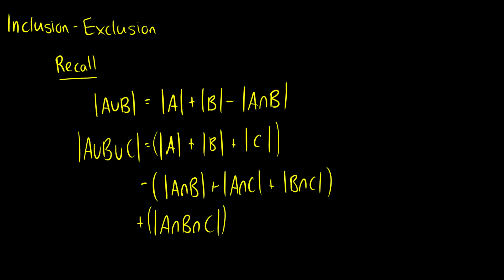So where is the motivation? Well, if you recall, the cardinality of A union B is equal to the cardinality of A plus the cardinality of B minus the cardinality of A intersection B. And if we take the union of three objects we can extend this a little bit further and we get a law that looks like the following.